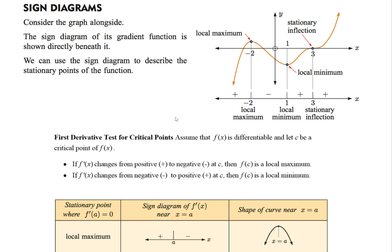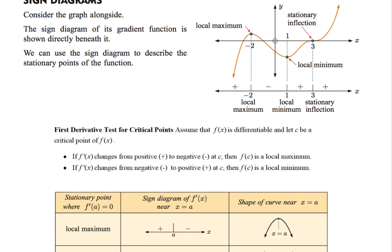Here's my graph — it has one of each: a local max, a local min, and a stationary inflection. Let's see how it works with a sign chart. At the local max, the function is increasing before it, so it's positive, and then decreasing after, so it's negative. On a sign chart it goes from plus to minus — when you go from positive to negative, it's a local max.